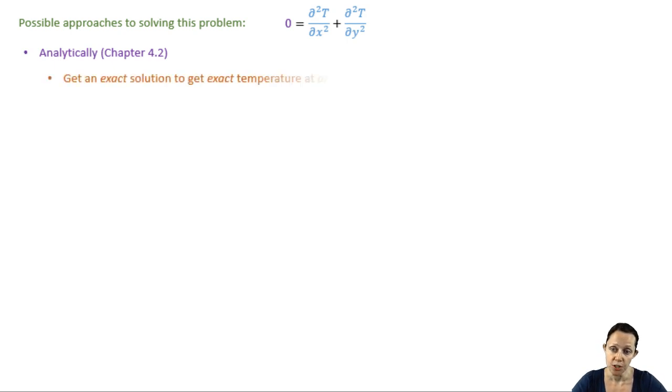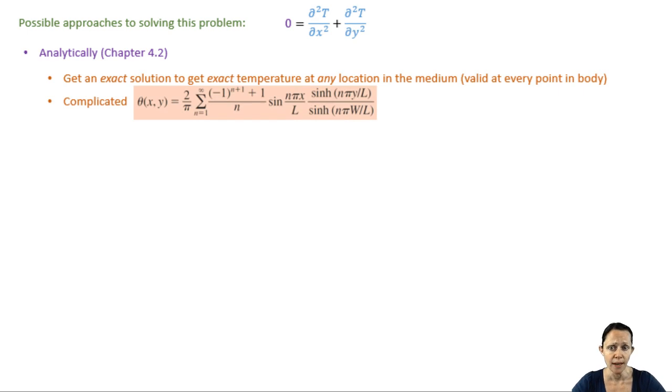We'll use separation of variables, which you may remember from your differential equations class to get an exact solution for the temperature distribution. This means that we'll be able to solve for the temperature at any location at all in the medium. But it's complicated. We'll end up with complex-looking solutions in series form. It's ugly. And it's only possible to solve for simple geometries and boundary conditions.